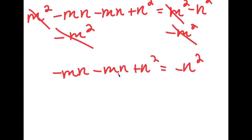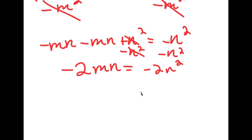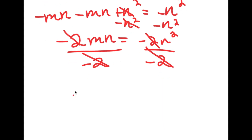Negative mn minus mn is equal to negative 2mn. Now if I subtract n squared on both sides, those cancel out and I get negative 2mn equals negative 2n squared. From here I can divide both sides by negative 2, so the negative 2s cancel out, and I'm left with mn is equal to n squared.